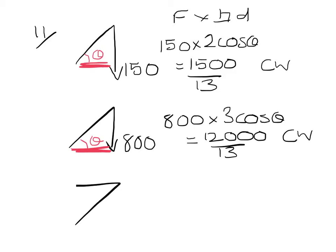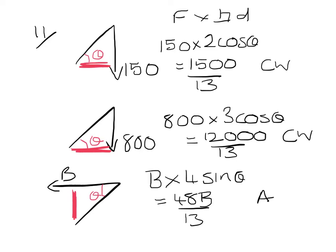Third force is the reaction force. This time using alternate angles, the angle theta is at the top and the perpendicular distance is opposite the angle so I am going to be using sin. So b times 4 sin theta gives me 48b over 13 and this will be in an anti-clockwise direction.